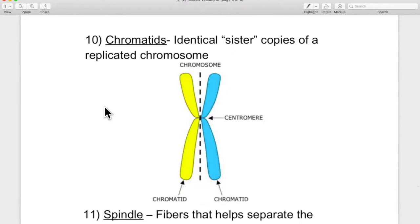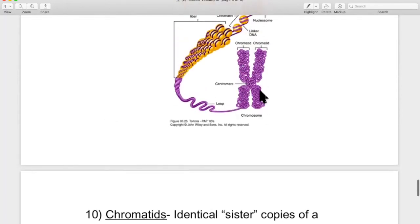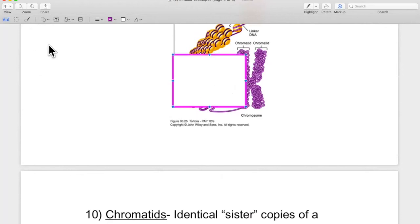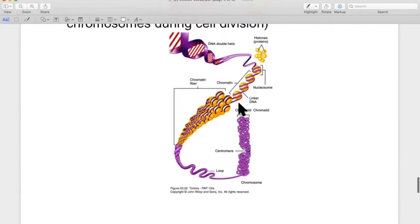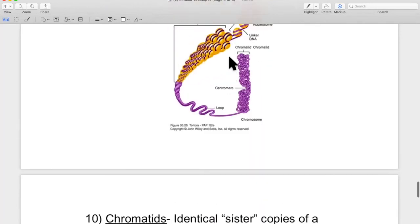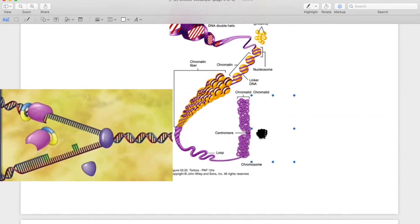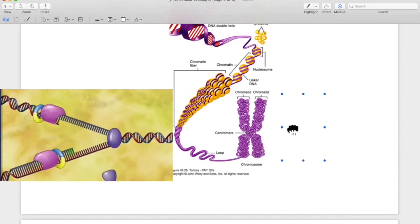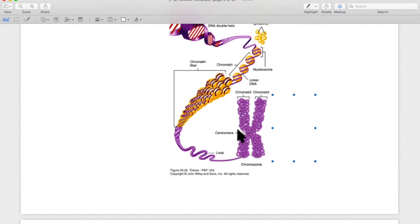Chromatid. This is a confusing thing. Identical sister copies of a replicated chromosome. Meaning, this is not the two that make you diploid. This is not mom's and dad's. No, no, no, no, no. This is all from one parent. But they're identical because you went through DNA replication. That is a chromatid. It is made up of chromatin all braided up. You went through DNA replication. So you have two chromatids. One chromatid, two chromatids. Together they make up a chromosome. This is one chromosome, two chromatids together. Why is that confusing? We'll talk about it later.